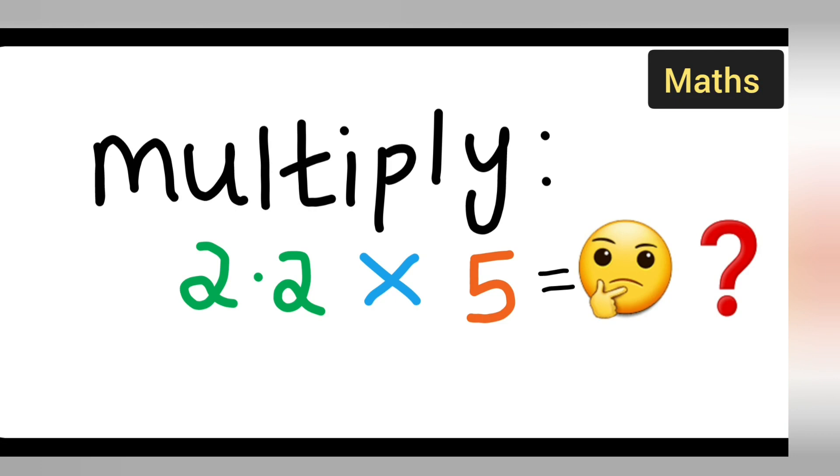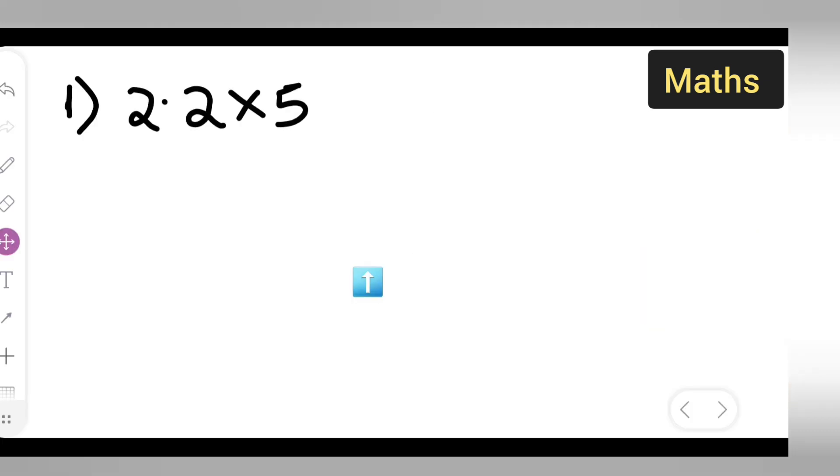Welcome to today's math class. Today's question is: multiply 2.2 by 5. Let's multiply a number with a decimal point by a number without a decimal point. There is a basic trick.